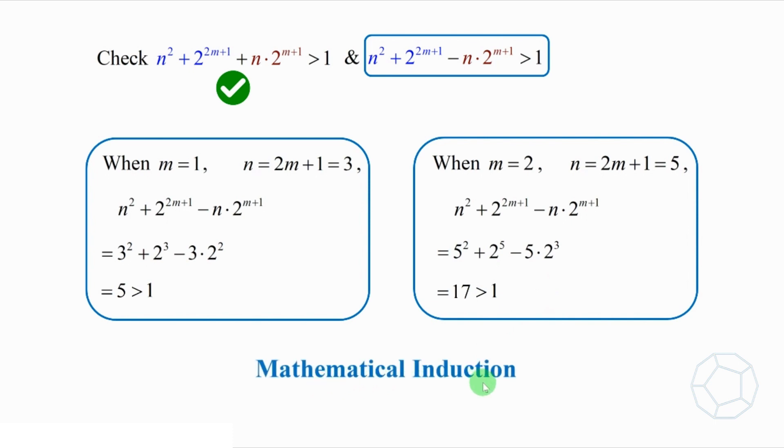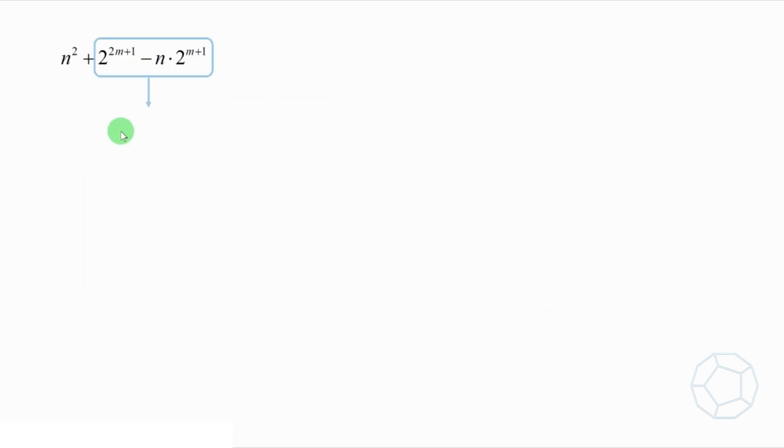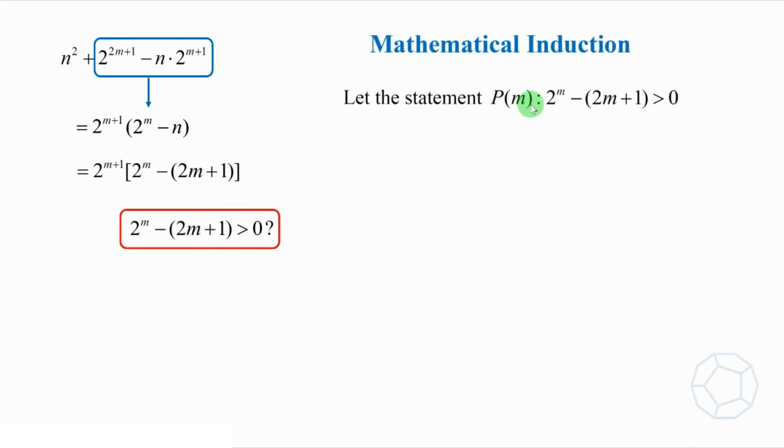So, what is the statement to prove? Let's focus on the last two terms. Take out the common factor 2 to the power of m plus 1. We have 2 to the power of m minus n, which is 2 to the power of m minus bracket 2m plus 1. Let's make a conjecture. If this term is positive, then everything looks good. So, we let this be our statement p of m for all positive integers m, where m is larger than or equal to 3.